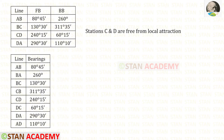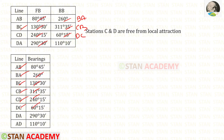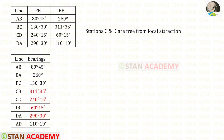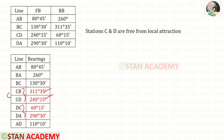Now let us make a table. In the table, first let us enter the line and then the bearings — the bearing of AB, BA, BC, CB, CD, DC, DA, and AD. We know that stations C and D are free from local attraction. The readings taken from station C and from station D will be correct, so these bearings require no correction.